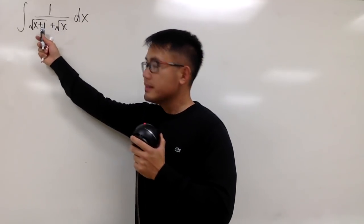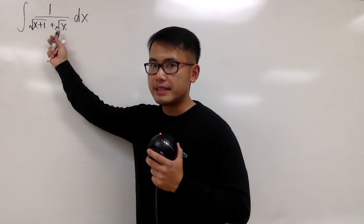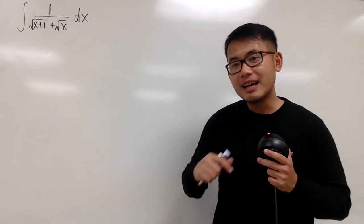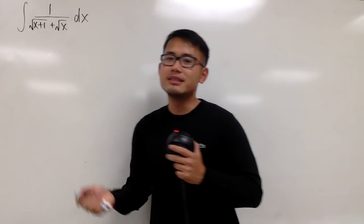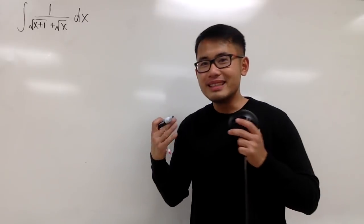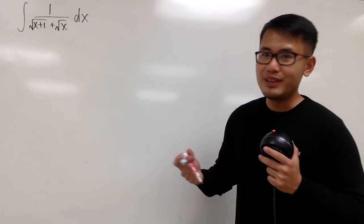And as you can see, this time we put down the square root of x plus 1 plus square root of x in the denominator. Last time, we put this inside of the ln. But anyway, pause the video, try this first.